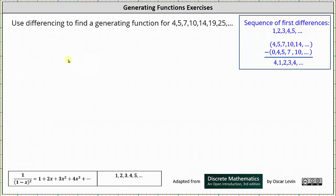For the next step, we let A equal the generating series for the given sequence, which indicates A equals 4 plus 5x plus 7x squared plus 10x to the third plus 14x to the fourth plus dot dot dot.